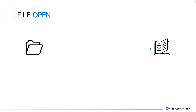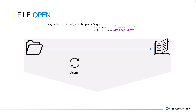Next is the file open. The function file_open_a must be done asynchronously. For file name you choose the file that should be opened, and the last parameter is the attribute — for example, to open it for read and write or just in read-only mode. This method returns an asynchronous ID, which is needed later to know the status of the asynchronous task — whether it is still in progress or already finished.